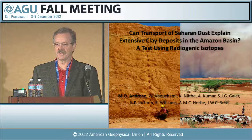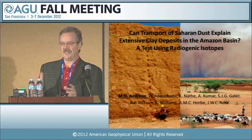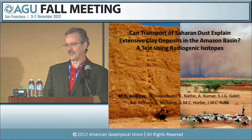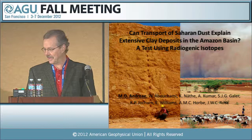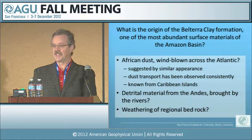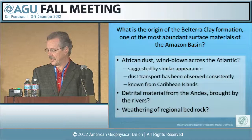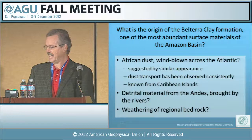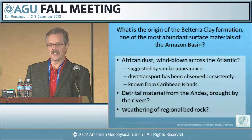You see similar colors on both sides. Consideration of this source of dust on one side of the Atlantic, the known fact that some dust gets transported across, and what looks visually similar on the other side led people to the idea that maybe all this clay formation we find in the Amazon is actually material that comes wafted across on the trade winds from Africa. The hypothesis we're examining is: maybe the origin of this Belterra clay formation in the Amazon — one of the most abundant surface materials — is actually dust blown from Africa.